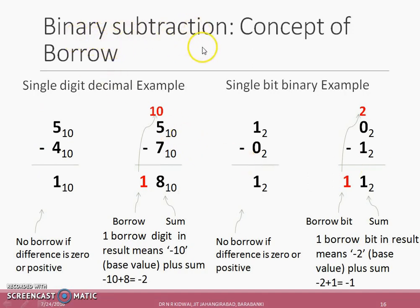Before explaining the binary subtraction, the concept of borrow is revisited. If we take a single digit decimal example, if the first number is equal to or higher than the second number, then no borrow is required.